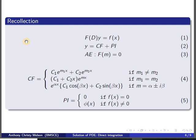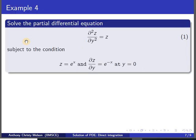The particular integral is 0 if the right-hand side is 0. If f(x) = 0, then the equation is called a homogeneous differential equation, and the solution y will be just the complementary function. If f(x) ≠ 0, we need to find a particular integral depending on f(x). We will take the example ∂²z/∂y² = z, subject to the conditions z = e^x and ∂z/∂y = e^(-x) at y = 0. Choosing ∂/∂y as the differential operator D, equation 1 reduces to (D² - 1)z = 0.